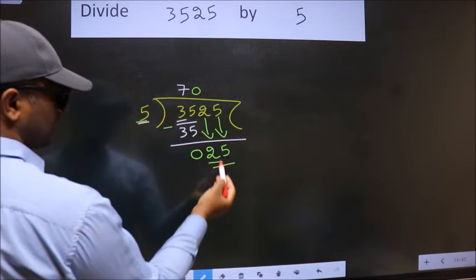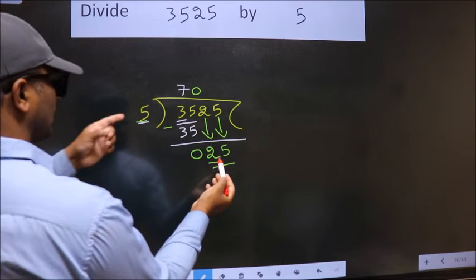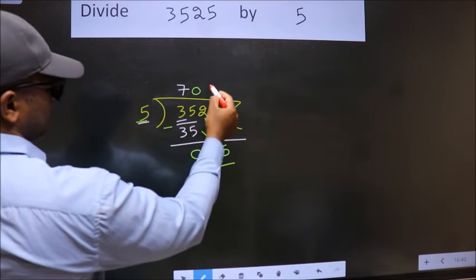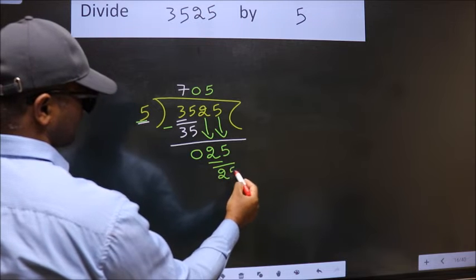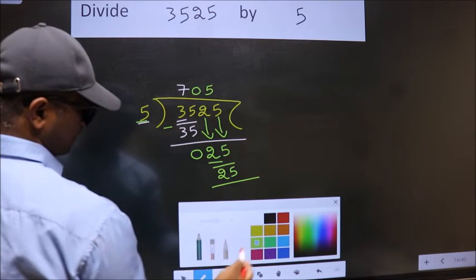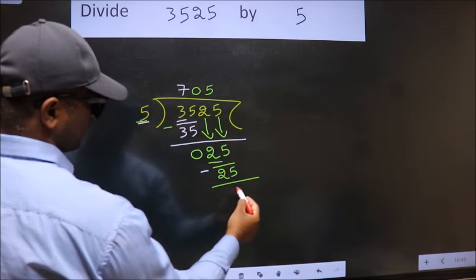So, 25. When do we get 25? In 5 table. 5 5s, 25. Now, we subtract. We get 0.